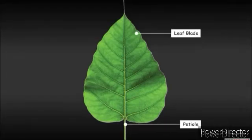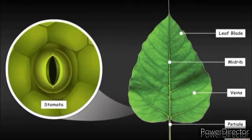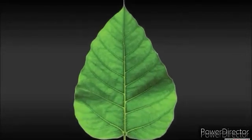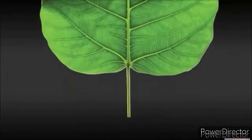Every leaf has a leaf blade, petiole, midrib, veins, and stomata. Let us learn about each of them one by one. The flat and broad part of the leaf is called the leaf blade. The leaf blade is attached to the stem of the plant through a tiny stalk called the petiole.